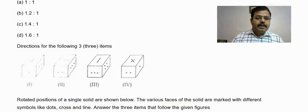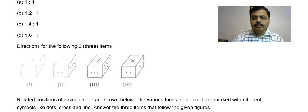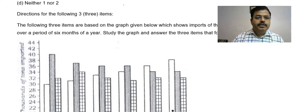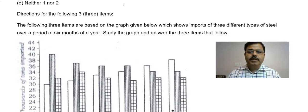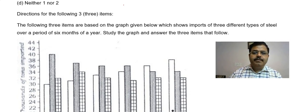Let us discuss some question and answer, how to deal with all those three questions here. The directions for the following three questions are based on the graph given below which shows imports of three different types of steel over the period of six months of a year. Study the graph and answer the three items below.